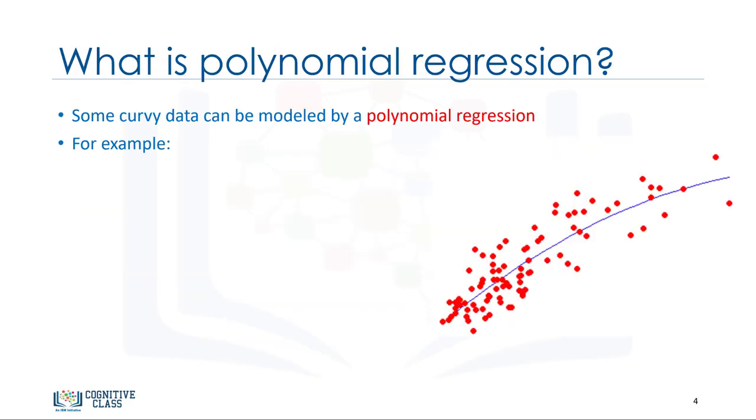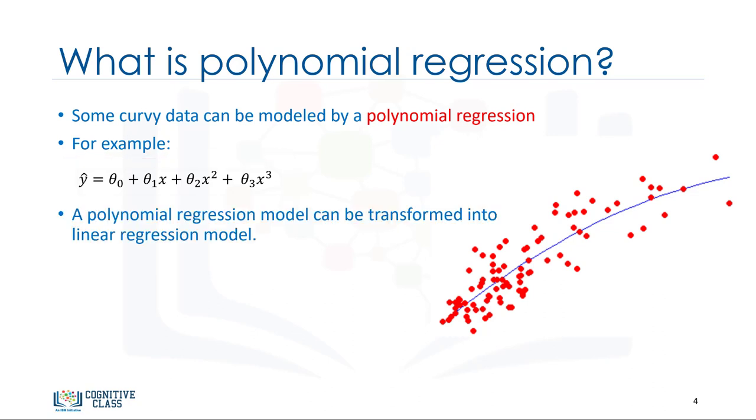So, what is polynomial regression? Polynomial regression fits a curved line to your data. A simple example of polynomial with degree 3 is shown as y hat equals theta 0 plus theta 1x plus theta 2x squared plus theta 3x cubed or to the power of 3, where thetas are parameters to be estimated that makes the model fit perfectly to the underlying data. Though the relationship between x and y is non-linear here, and polynomial regression can fit them, a polynomial regression model can still be expressed as linear regression.